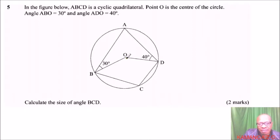Point O is the center of the circle. We have it there. Angle ABO is 30 degrees, we have that, and angle ADO is 40 degrees. Calculate the size of angle BCD. This is the angle that we are required to calculate.